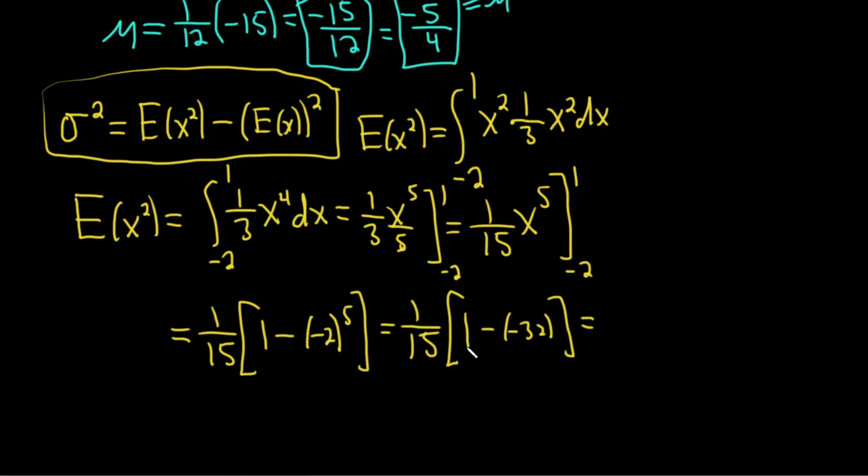So this equals one-fifteenth times (1 plus 32), which is 33. This is nice because 3 goes into 33 eleven times and into 15 five times. So we have 11 fifths. That's the expected value of x squared.